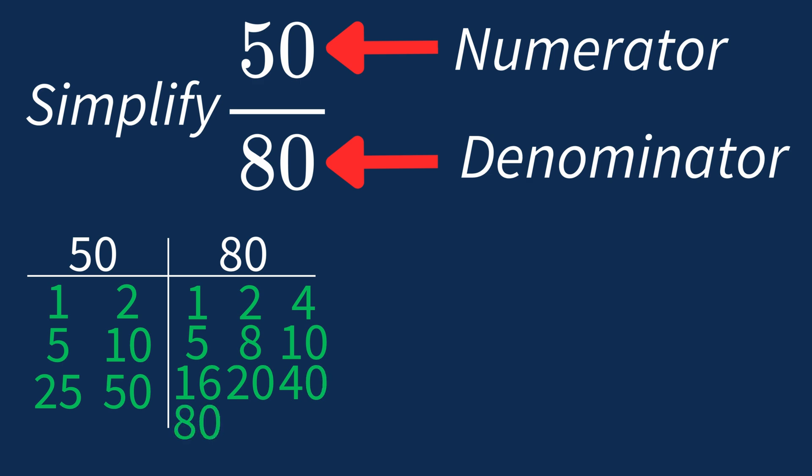So the largest common factor between 50 and 80 is 10. This means we can divide both the numerator and denominator by 10 to simplify the fraction. Dividing the numerator 50 by 10 gives us 5. Dividing the denominator 80 by 10 gives us 8.